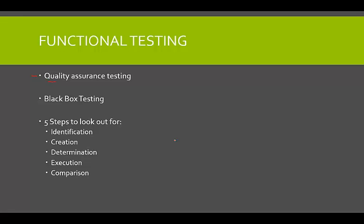Quality assurance is probably one of the most important things. It is the systematic measurement and comparison with a standard, monitoring of the process, and an associated feedback loop that confers error prevention. We're trying to figure out with functionality and quality assurance testing whether there will be any error in the layout or design — is there any difference from the wireframes or design elements from the design team? Is it working properly as it was supposed to? Quality assurance doesn't just stop at programming — everything goes through quality assurance. If you buy a new car, that thing went through quality assurance testing. It's pretty much the same principle.